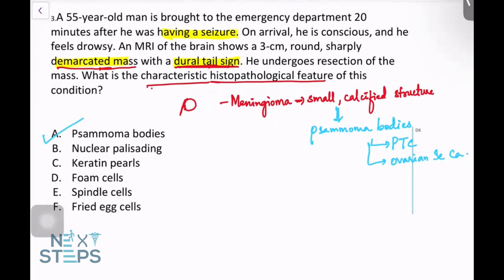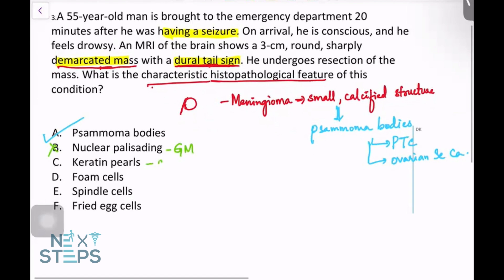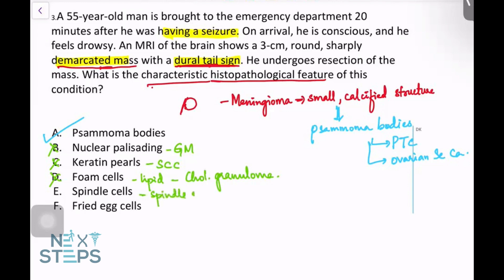Looking at the other options: nuclear palisading is seen in glioblastoma multiforme; keratin pearls are usually seen in squamous cell carcinoma; foam cells are lipid-laden macrophages seen in cholesterol granuloma and a few other benign tumors; spindle cells are seen in spindle cell sarcoma and other tumors; and fried egg cells are very characteristic of germ cell tumors such as seminoma, germinoma, and other brain cell tumors.